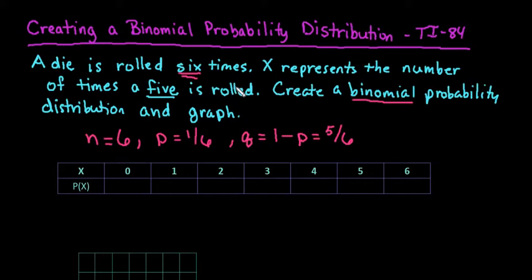And then X has to represent the counts or the possible times that you could get a success out of six times. We could have zero successes, that means I could roll a die six times and not get any fives, or I could get one five or two fives or three fives or four fives or et cetera, all the way down to six. Six is the most that I could get.